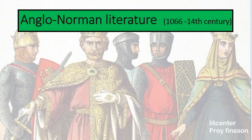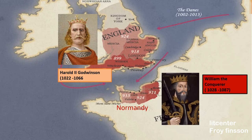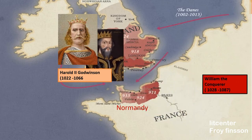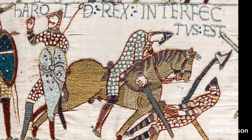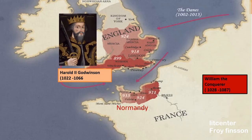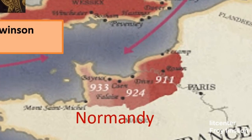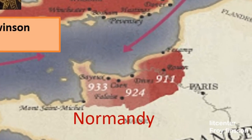Sir Gawain and the Green Knight is written in the Anglo-Norman period of literature in England. This period started in 1066 when William I of Normandy defeated the Anglo-Saxon king Harold II in the Battle of Hastings. After the victory of William the Conqueror, England came under Norman rule. These Normans came from the Normandy region in France and spoke the French language.